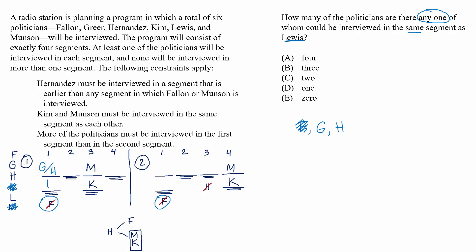So we have our answer. Those are the only two people left. Only Hernandez and Greer could be paired with Lewis in segment one. C is our answer.